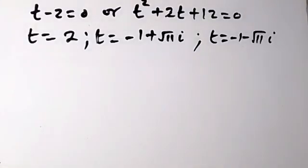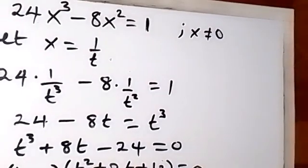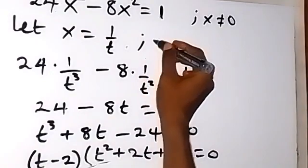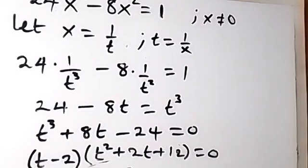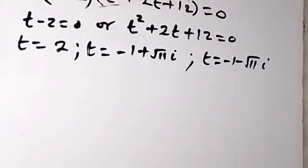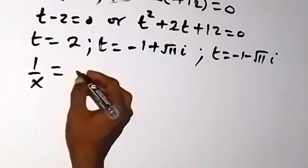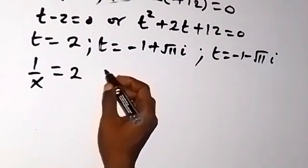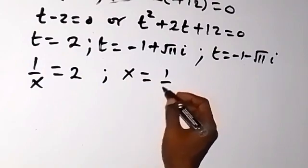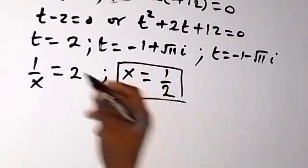Recall that x = 1/t, so t = 1/x as well. From t = 2, we have 1/x = 2, so taking the reciprocal gives x = 1/2. This is the solution from the first value of t.